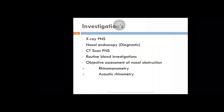Investigations: we do an X-ray of the paranasal sinuses. Nasal endoscopy is diagnostic. CT scan of paranasal sinuses is done to look for septal deviation, turbinate hypertrophy, and the sinuses. Routine blood investigations are done if the patient is planned for surgery. Objective assessment of nasal obstruction using rhinomanometry and acoustic rhinomanometry is done mainly for research purposes these days.